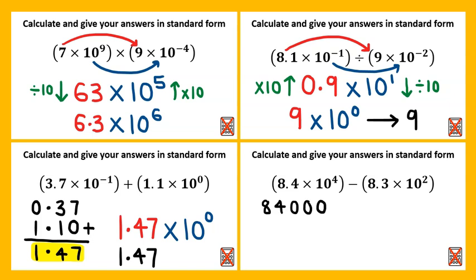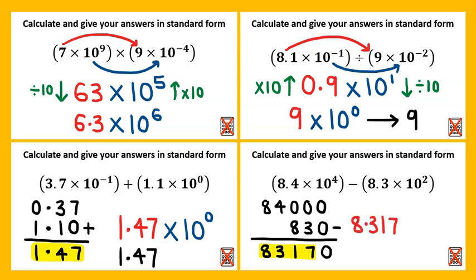Lastly we have eighty-four thousand minus eight hundred and thirty. This gives us eighty-three thousand one hundred and seventy. The significant figures are eight three one seven, so between one and ten: eight point three one seven, multiplied by ten to the power of one, two, three, four.